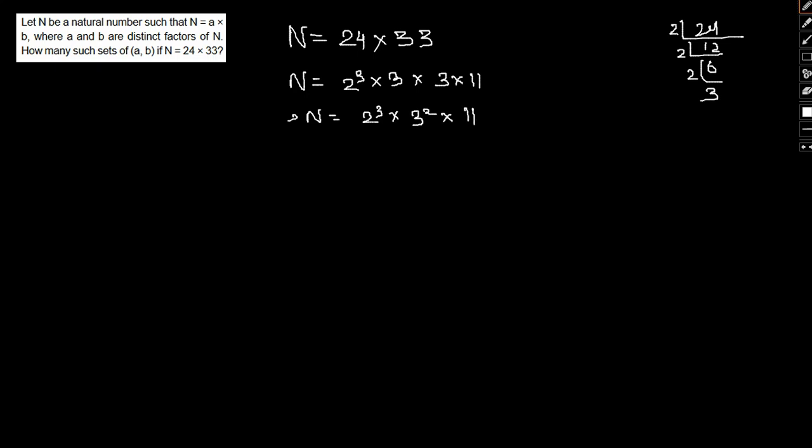Now if I have to find the number of factors, that would simply be 3 plus 1, times 2 plus 1, times 1 plus 1, which equals 4 times 3 times 2, or 24. So the number of factors will be 24.